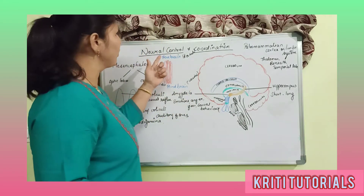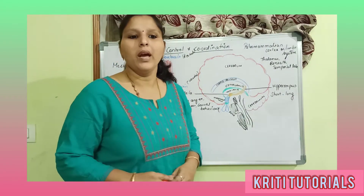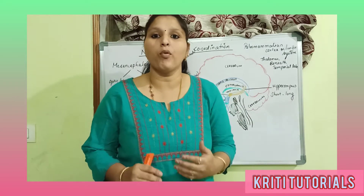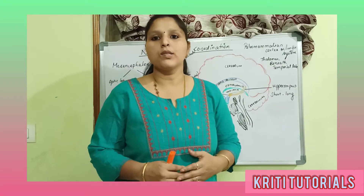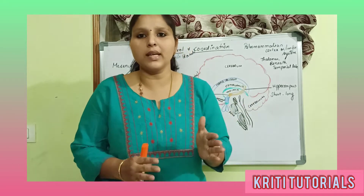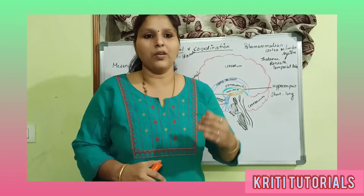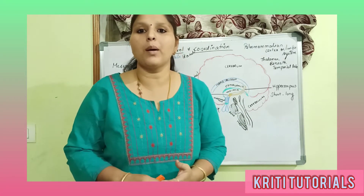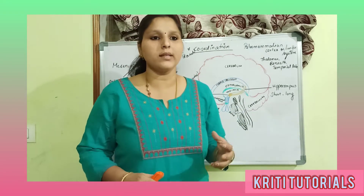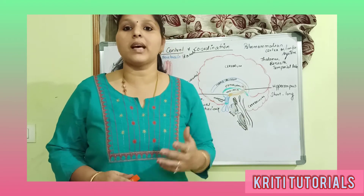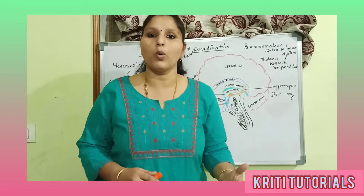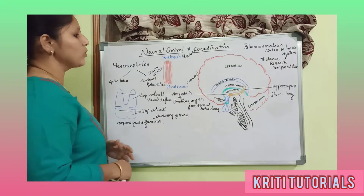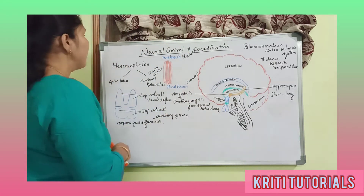Let's discuss neural control and coordination. In the previous classes we discussed about the forebrain in detail, including the olfactory lobes, the cerebrum which is called the seat of intelligence, and the diencephalon. Now let us discuss the next part of the brain.